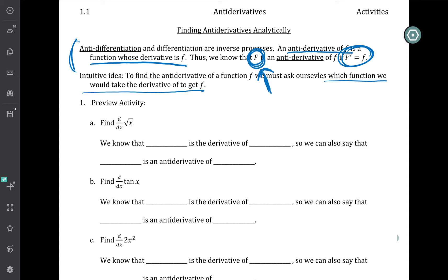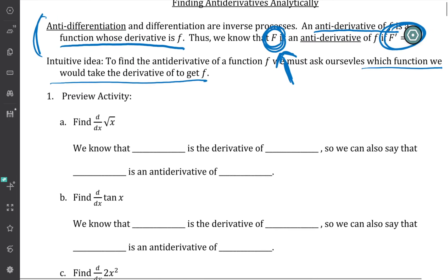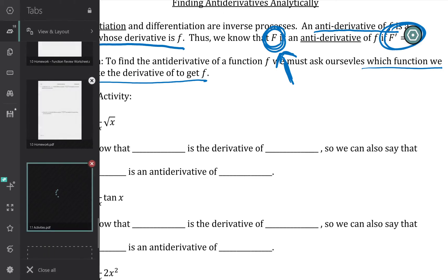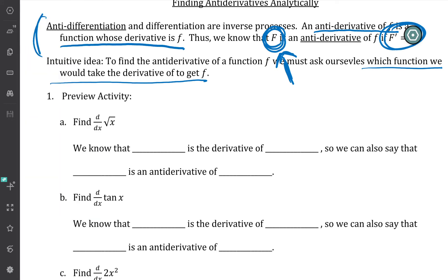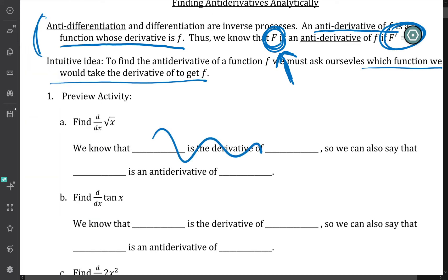The preview activity gives us a little Calc 1 review. We're supposed to first find the derivative and then fill in the blanks in this sentence, so this has us use our vocab a little bit. If I want to find the derivative of the square root of x, what is going on? My pen is being dead, don't mind me. Let me see if I can switch around and get it to start working again. There we go, sorry.